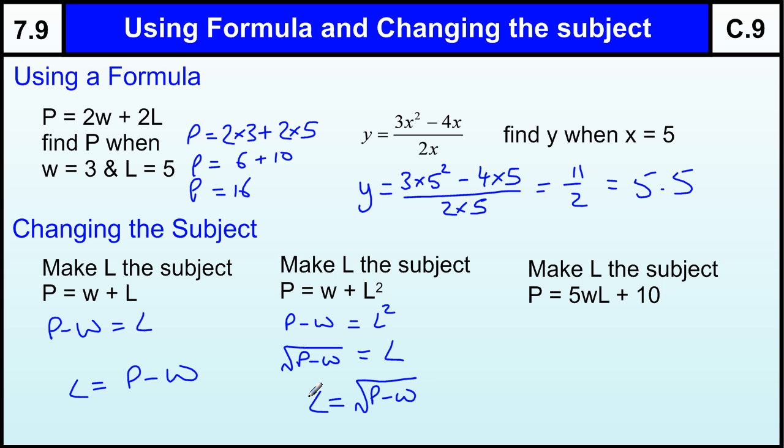It doesn't matter if there's a number involved. We just move that to the other side. So P take away 10 equals 5WL. And if I've got 5 lots, 5 times W times L, I can just divide straight away by the 5W and put all that over 5W.